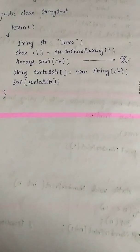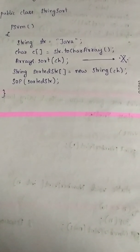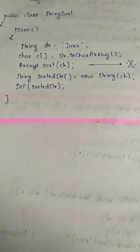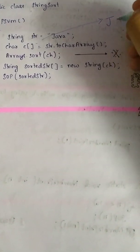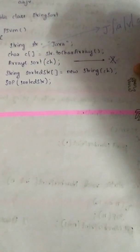The toCharArray method is used to convert the string which is the input to characters. After you use this method, the characters will be separated: J is separate, A is separate, V is separate, and A is separate.